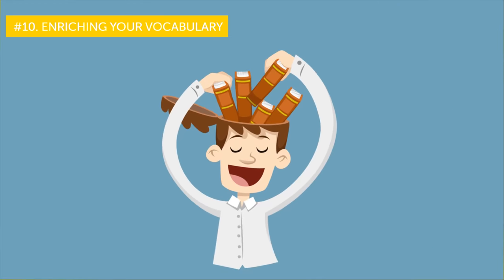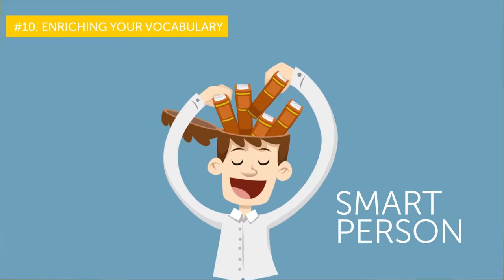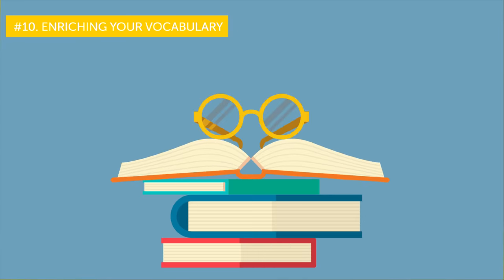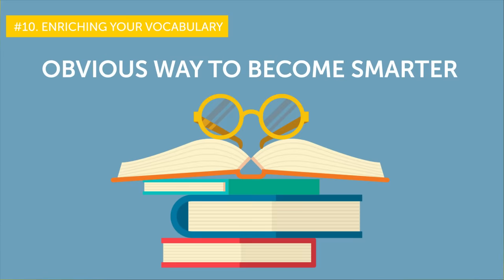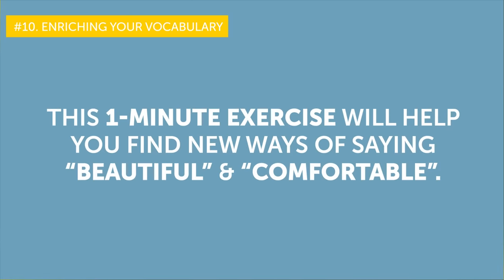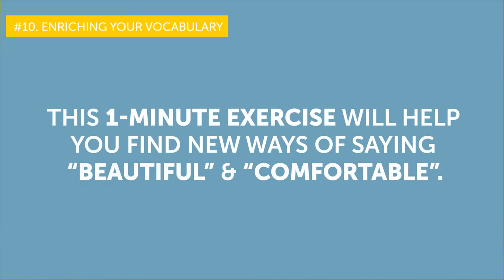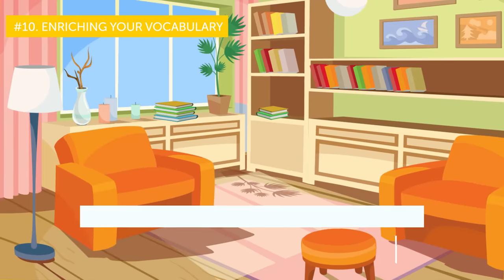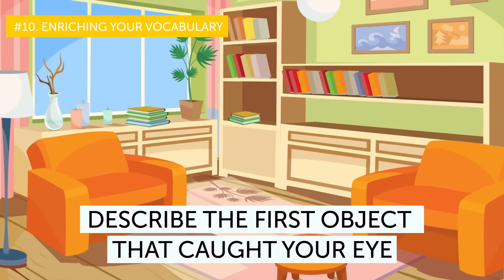A rich vocabulary is a sign of a smart person, isn't it? Reading books is an obvious way to become smarter. However, not all of us honestly have time for that these days. Here's a solution. This one-minute exercise will help you find new ways of saying beautiful and comfortable. Look around. Now, describe the first object that caught your eye.